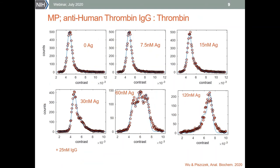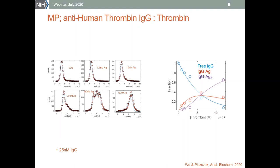We obtained the population of each species by fitting the mass distributions with Gaussian peaks. This is a series of distributions obtained from a titration, and we see that with increasing concentration of the antigen, peaks representing the protein complexes build up. After integrating the peaks, we can plot the populations of those species as a function of concentration and fit them using the two-to-one binding model.